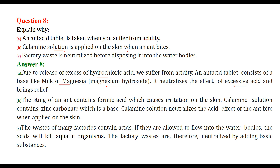Calamine solution is applied on the skin when an ant bites. The sting of an ant contains formic acid, which causes irritation of the skin. Calamine solution contains zinc carbonate, which is a base. It neutralizes the acid effect caused by the ant's sting, and when applied, the suffering and irritation can be avoided.